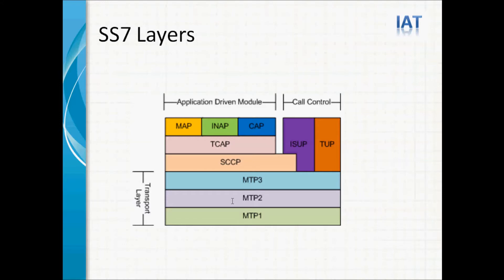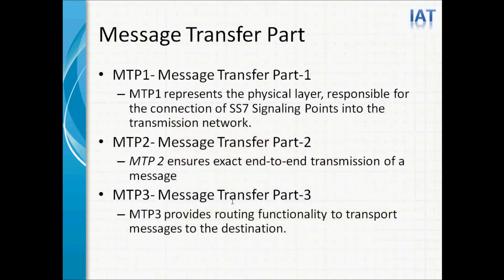SS7 has seven layers, same as the OSI model. There are three transport layers: MTP1, MTP2, and MTP3. On top of the transport layer, we have SCCP, TCAP, MAP, INAP, and CAP for call control. I will give you a short description for each layer.